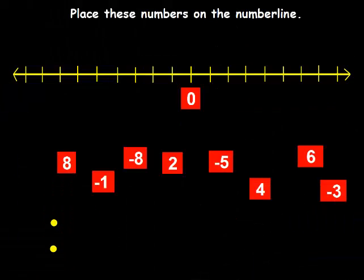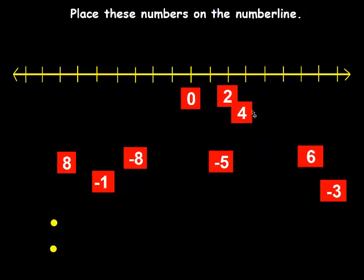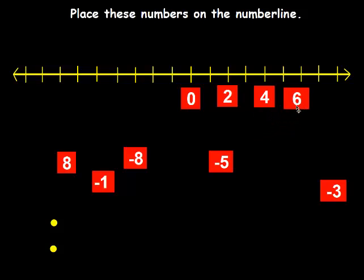Now we're going to place these numbers on the number line. I'm going to start with the positive numbers, because those are the easiest — the ones that don't have a negative sign in front of them. I see a 2, a 4, a 6, and an 8, and I'll place each of those on the positive side of the number line.